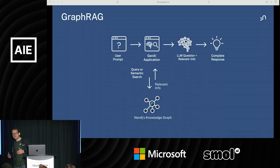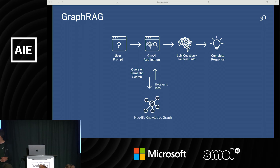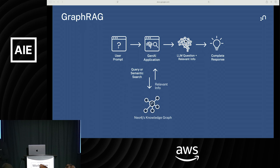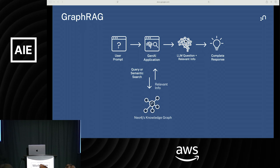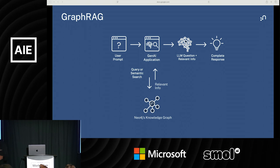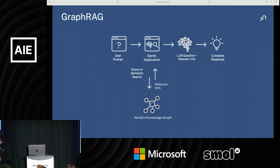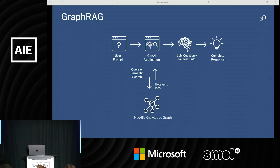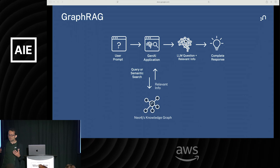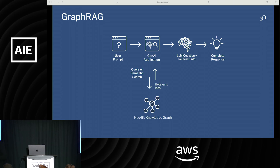GraphRAG is your RAG where you have replaced your vector database with a knowledge graph built on a graph database. The flow is the same: your AI application gets a prompt from the user, and instead of passing it directly to the LLM, it goes out to a retrieval — a controlled, curated, trusted knowledge base — to retrieve potentially relevant information that is passed to the LLM in the context window, so the response is grounded on trusted information rather than purely generated.